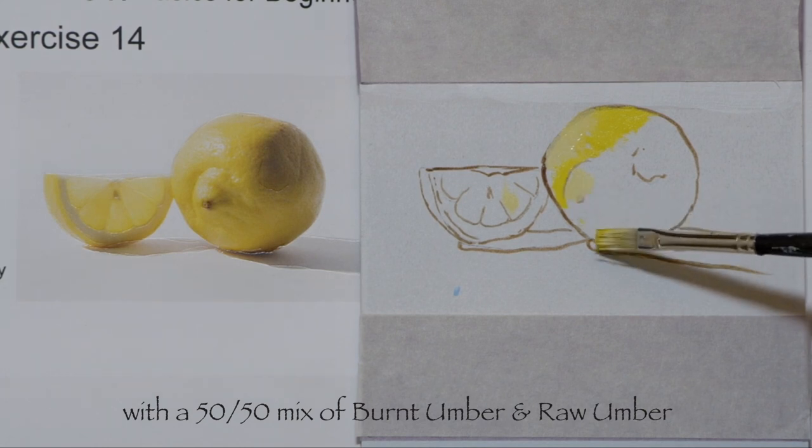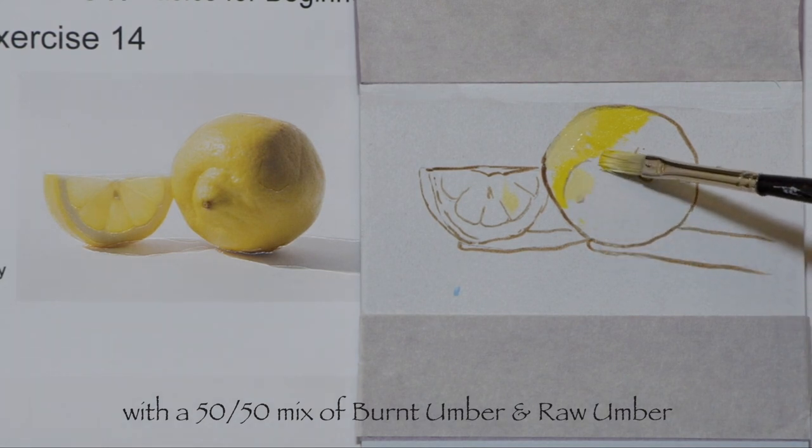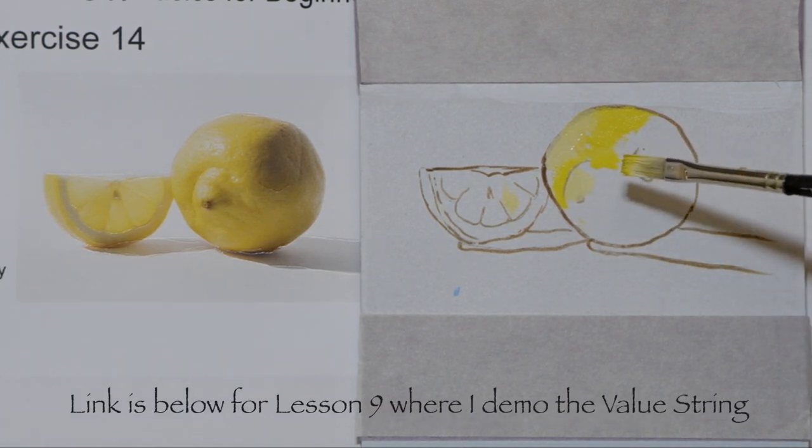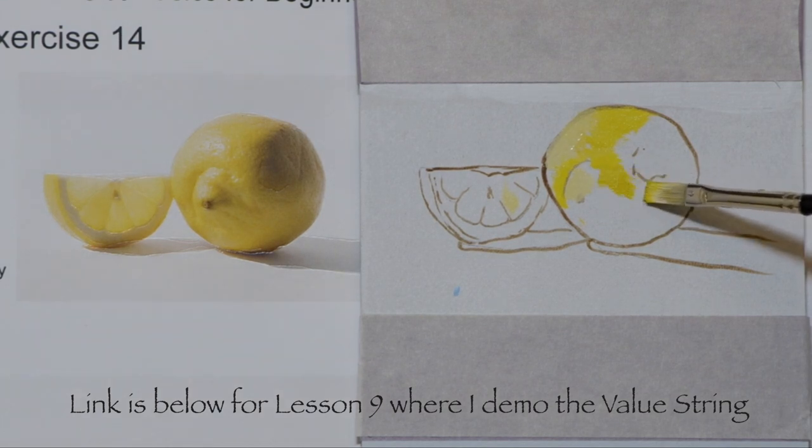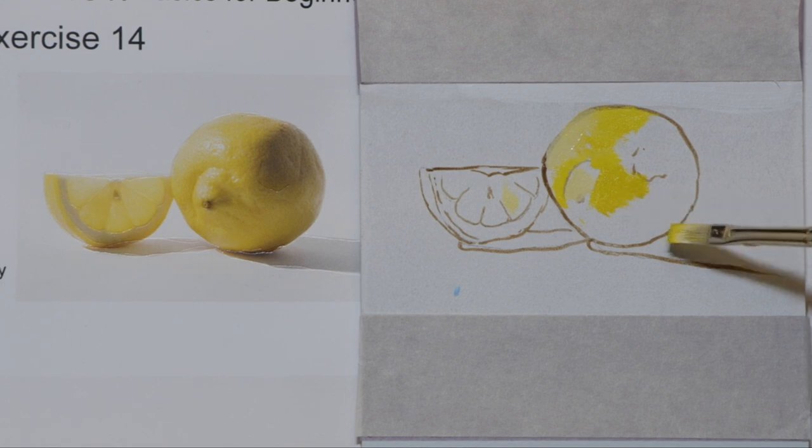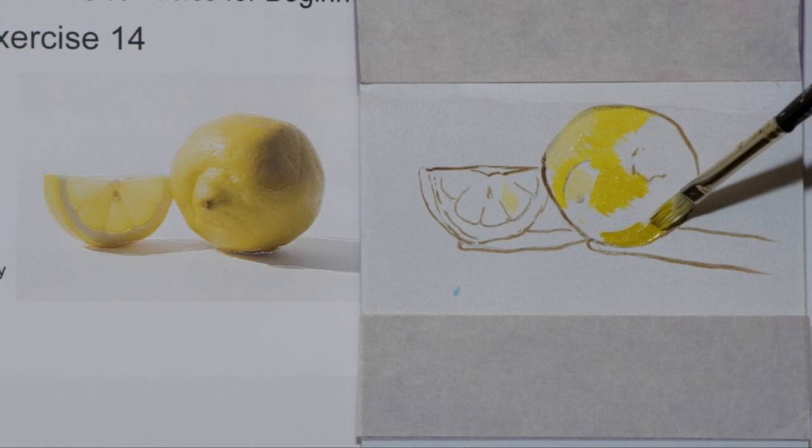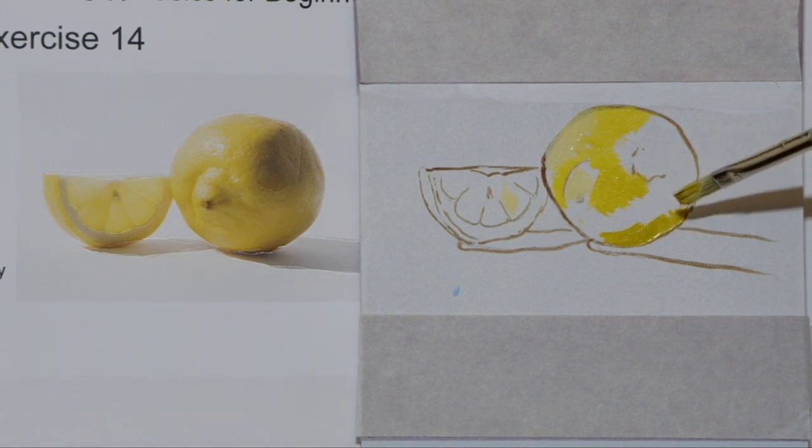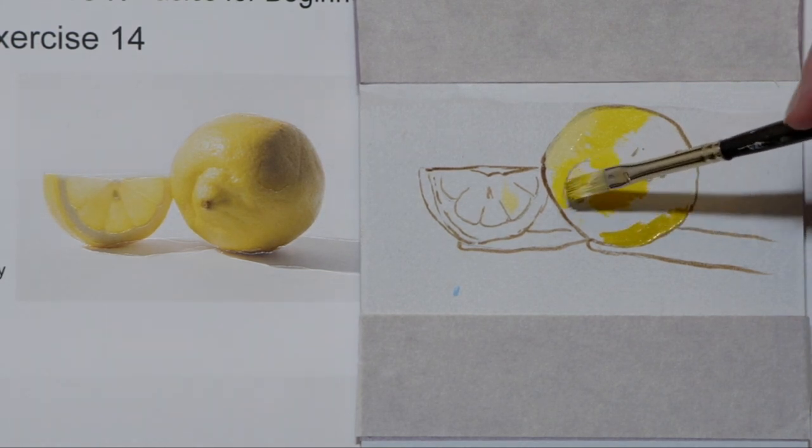You can find the image to work from on my website. The link is below the video or at dancingravenstudio.ca/blog and I'm coming in and placing some of the dark that I'm seeing just in the crevices and on the underplane side of the lemon.